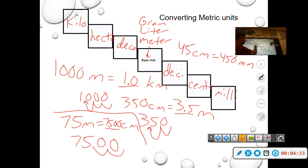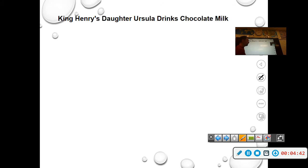A quick little way to remember this. Kilo, hecta, deca, gram, liter, meter, basic unit, desi, centi, milli. This is the way I remember it. King Henry's daughter Ursula drinks chocolate milk. Well, king is kilo, hecto for Henry, daughter would be deca, unit is going to be Ursula, drinks is desi, chocolate is centi, and then lastly, milk is milli.